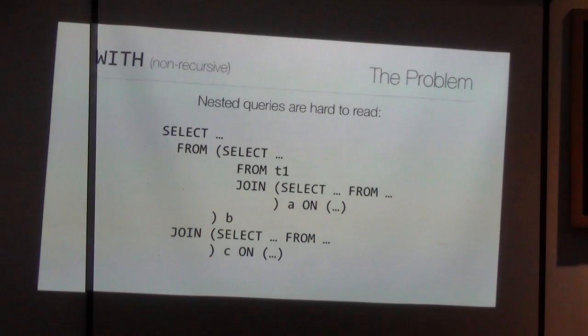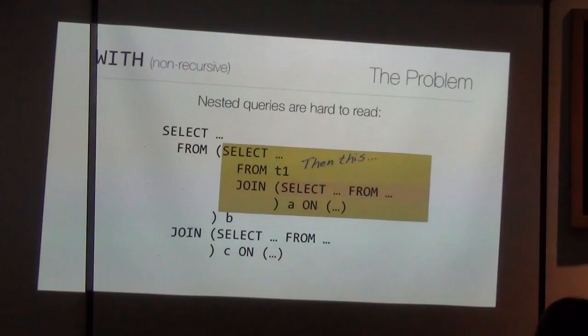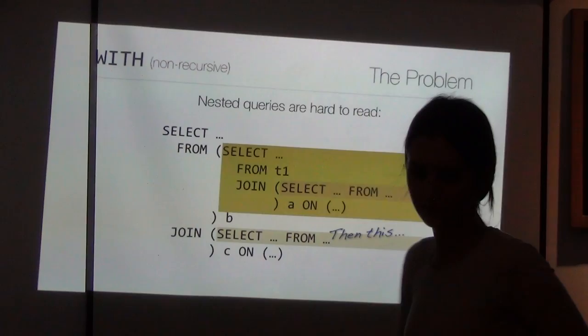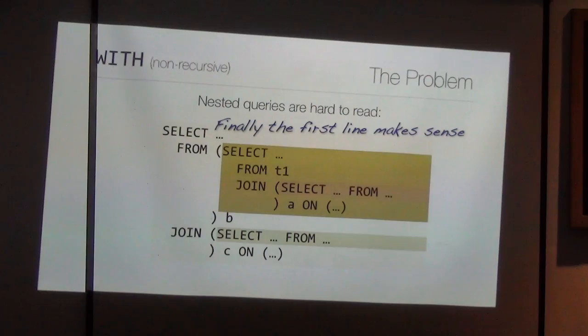What problem does the WITH clause solve? Look at this query. If I give you a deeply nested query like this, how can you read it? You stare at it and find the core, then understand the next level, and eventually the outer query — it's read from inside out, not top to bottom. And that's really hard for maintainability. The WITH clause solves this.